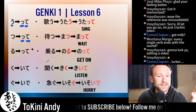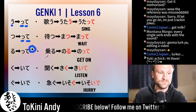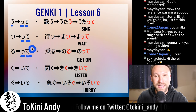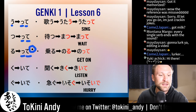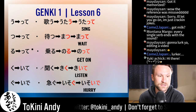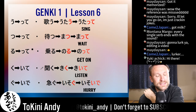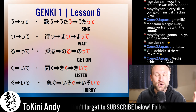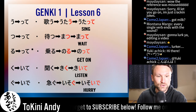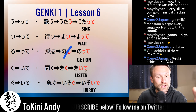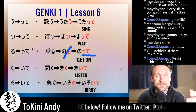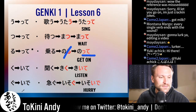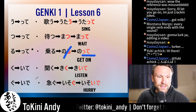Ru verbs — most ru verbs: you cut the 'ru,' add a small 'tsu' and 'te.' If you've been here for the other conjugation lessons, you know there are exceptions — the ichidan verbs conjugate a little differently, and they're actually really easy, but we'll get to them in a bit. Our first ru verb for today is 'noru,' which means 'to get on.' You cut the 'ru' and add this, and it becomes 'notte.' Get on the bike — notte!